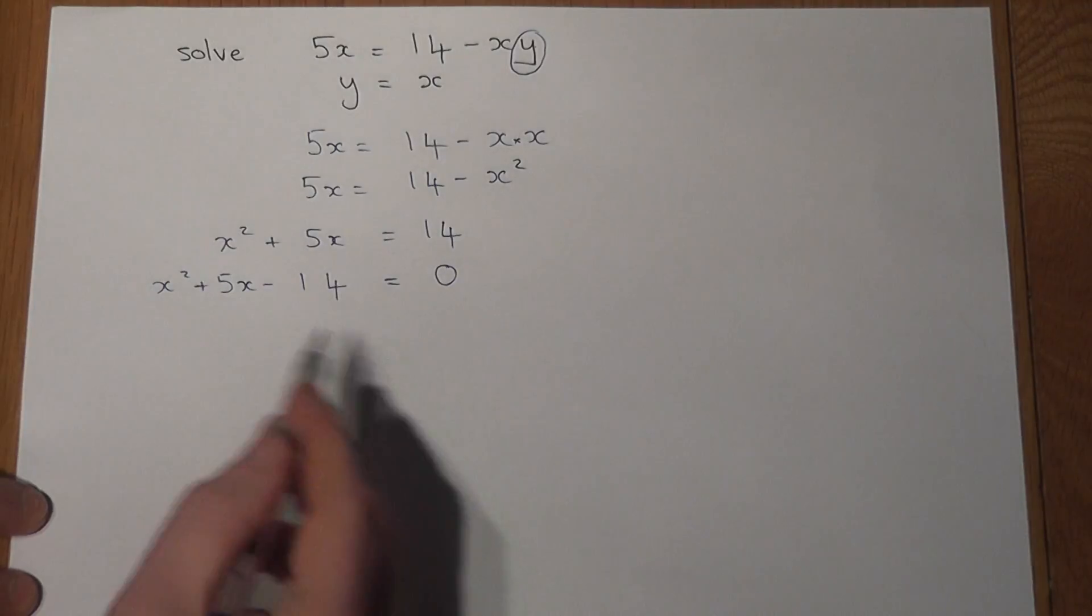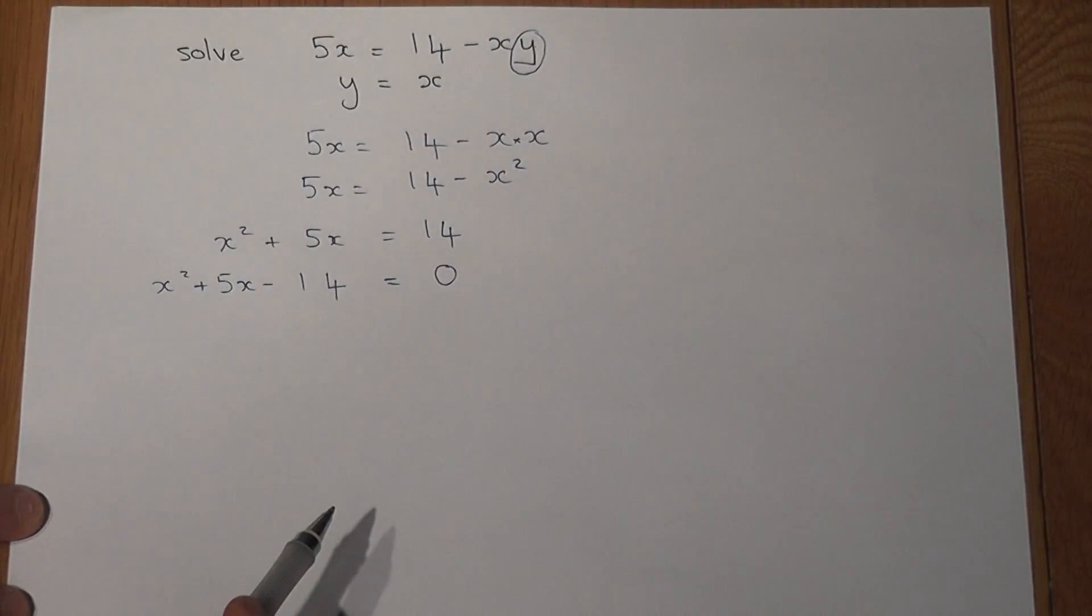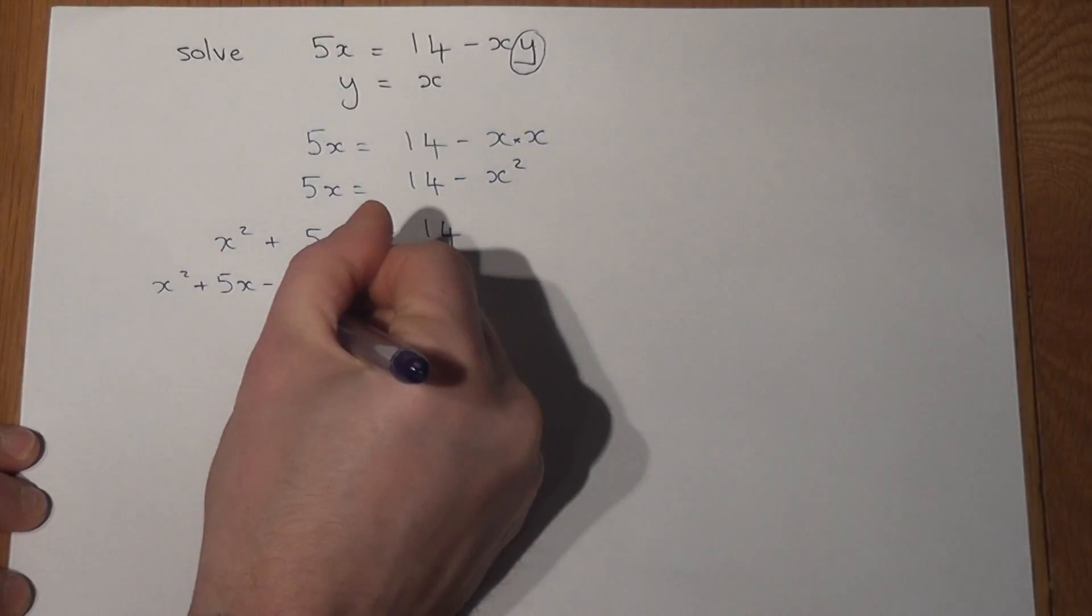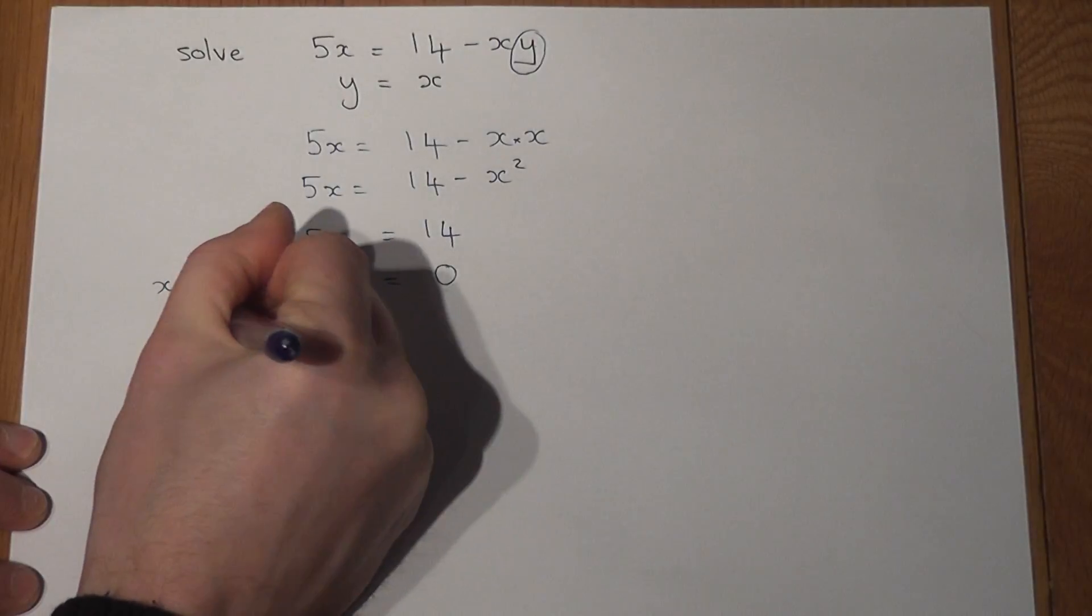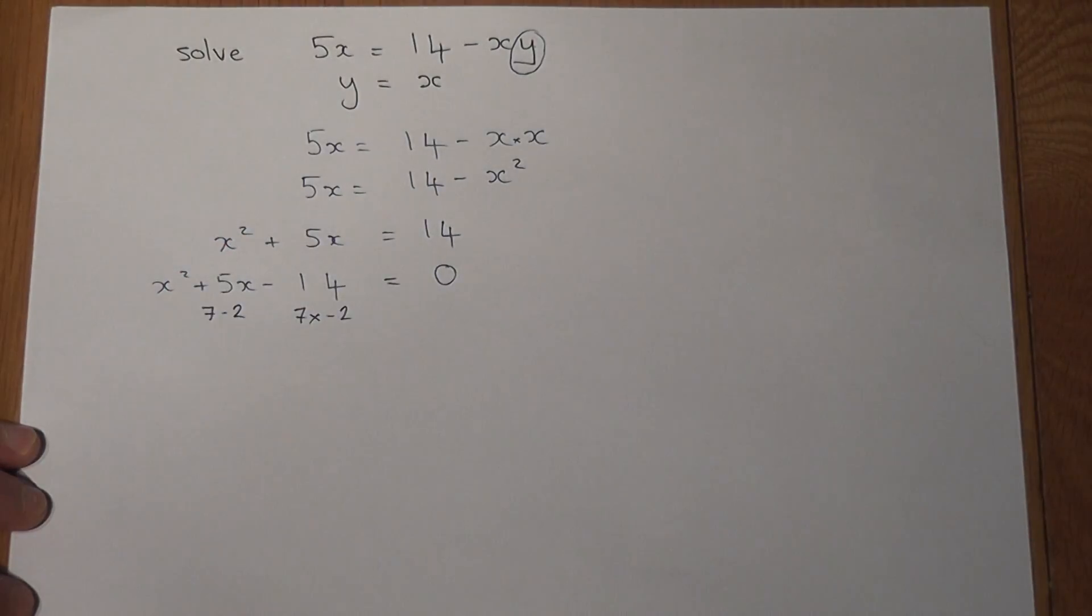This is now a quadratic equation equal to 0 which I can solve either with the formula or completing the square or by factorizing. And this does factorize because 7 lots of minus 2 is minus 14 and 7 take away 2 equals 5.